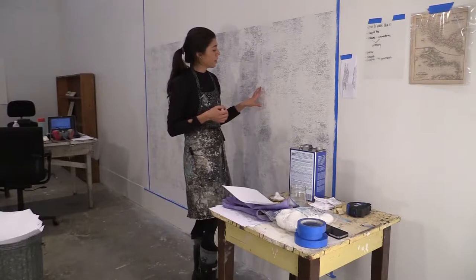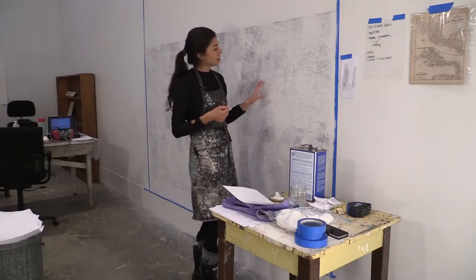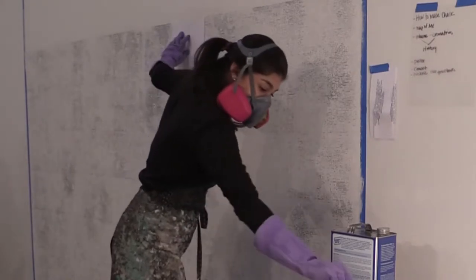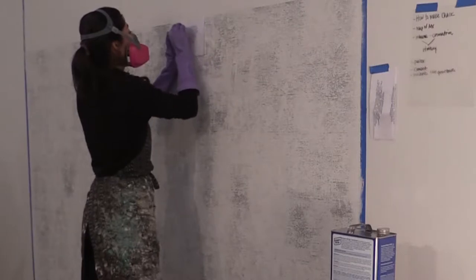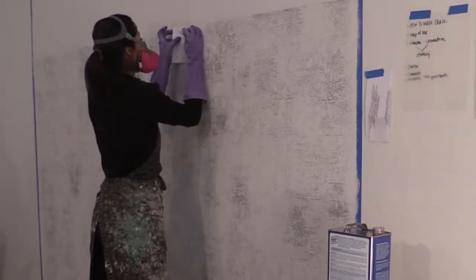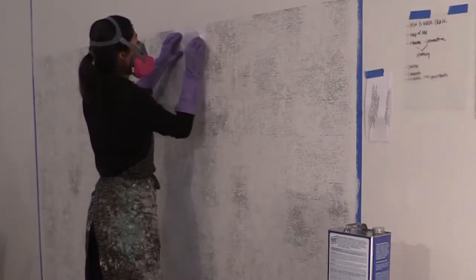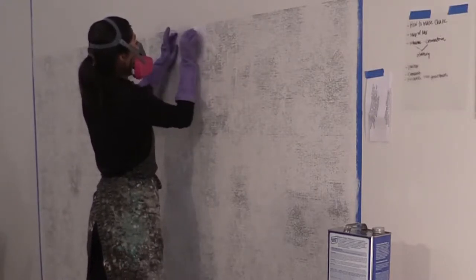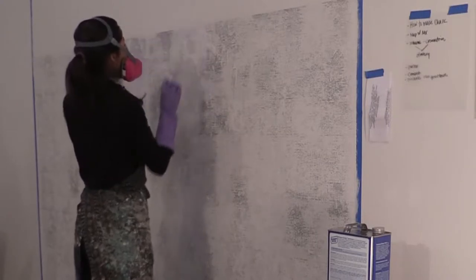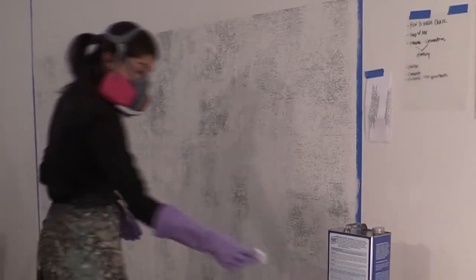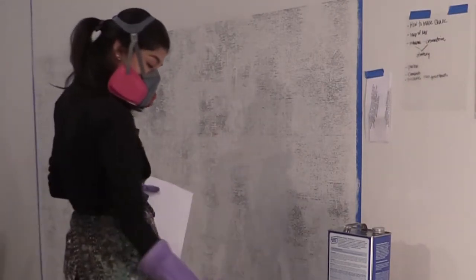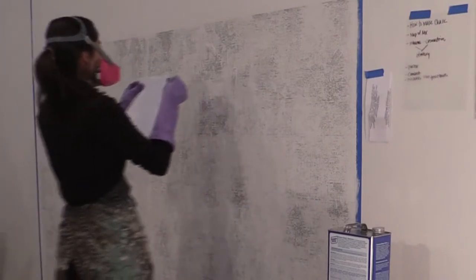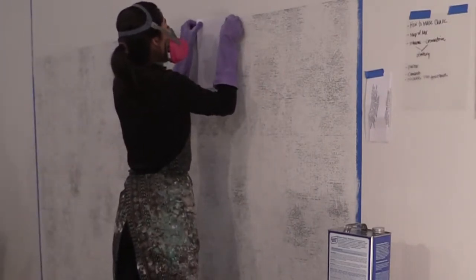This is a type of printmaking transfer process. What I've done is printed out the names of the victims, then I make copies on a specific copy machine because the ink contains an iron oxide — once the acetone hits the ink during the transfer process, it allows the ink to really bleed onto the surface. I'm essentially taking these revered names and applying them to the wall, lining each one up among the others.